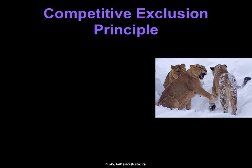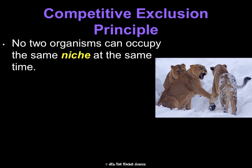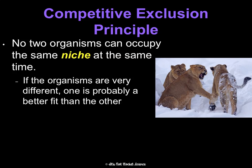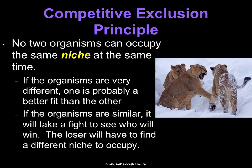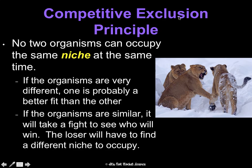The competitive exclusion principle states that no two organisms can occupy the same niche at the same time. If organisms are really different, one will simply be a better fit and may naturally take over. If they're really similar, they'll fight for the niche or resource, and the loser either dies or migrates to find a resource elsewhere. Think of the Lion King — Simba and Mufasa compete to be king of the pride because there can only be one. At the end, there's a big fight, Simba wins, and the other is excluded.